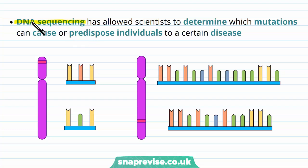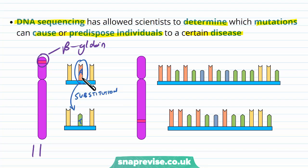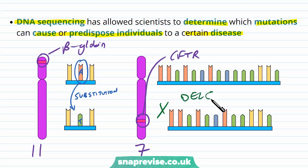DNA sequencing, where we look at the order of nucleotides in a particular length of DNA, has allowed scientists to determine which mutations can cause or predispose individuals to certain diseases. For example, on chromosome 11 on the beta-globin gene, a substitution from an A to a T nucleotide led to sickle cell disease. On chromosome 7, the CFTR gene became faulty due to a deletion of some nucleotides.